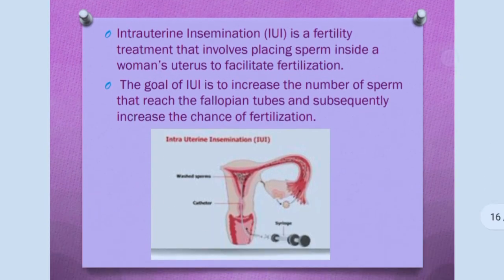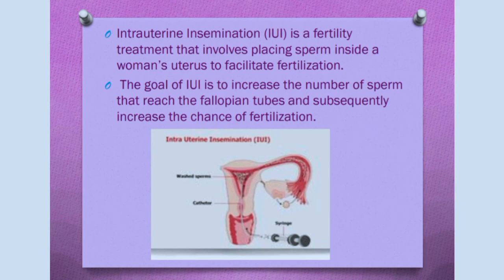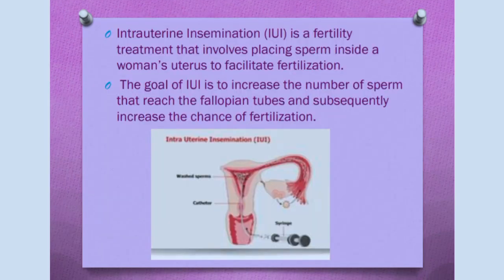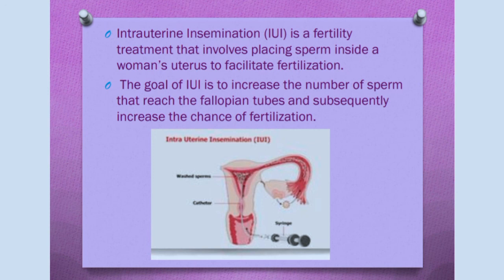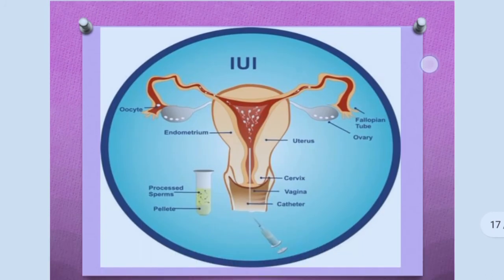The next technique is intrauterine insemination, or IUI. It is a fertility treatment that involves placing sperm inside a woman's uterus. The goal of IUI is to increase the number of sperm that reach the fallopian tubes and subsequently increase the chance of fertilization.